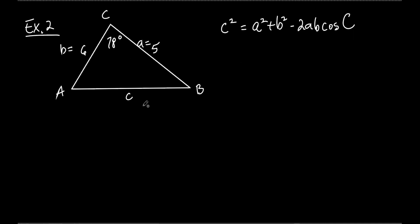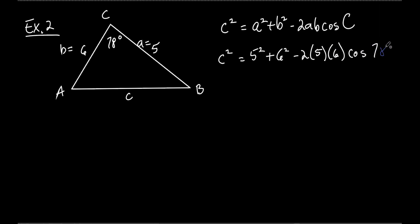What I'd suggest is every time you do one of these problems, write it down — the more you write it, the more you'll remember it. So C squared equals 5 squared plus 6 squared minus 2 times 5 times 6 times cosine of 78 degrees. And you get approximately 7.0. It rounds to 7.0, not 7.1 or 7.2 — the digit after was less than 5. That's called significant digits — you'll learn that in science.